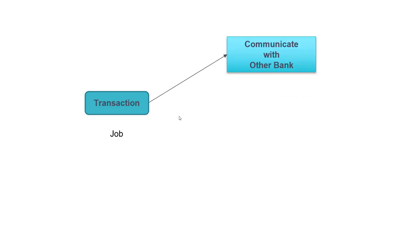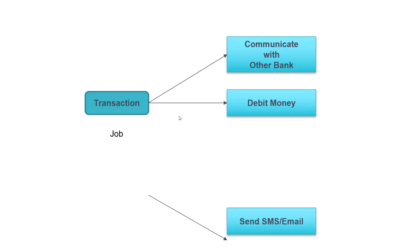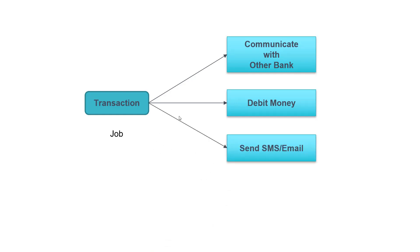In SpringBatch, a job can have multiple steps. In this example, the very first step is to communicate with the other bank, because the other user belongs to another bank — this is step one. The other step is to debit the money from the customer's account. The third step is to notify the user either using SMS or email. So these three are steps.